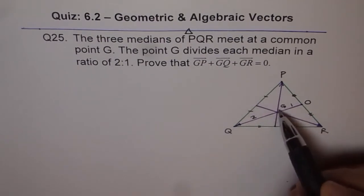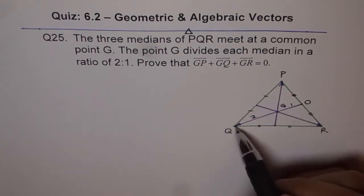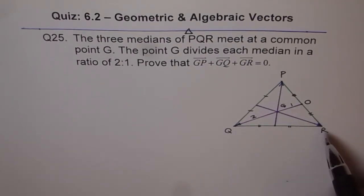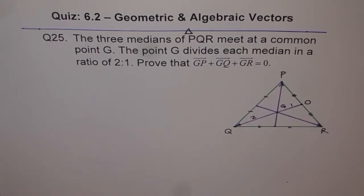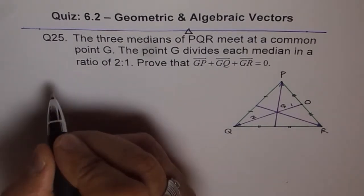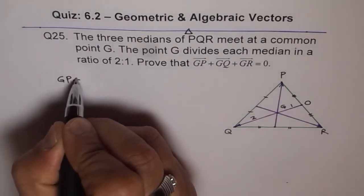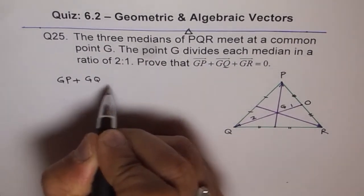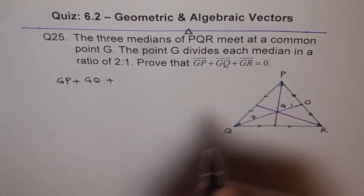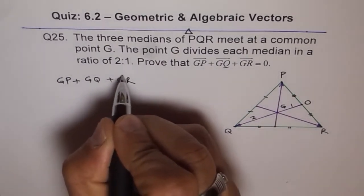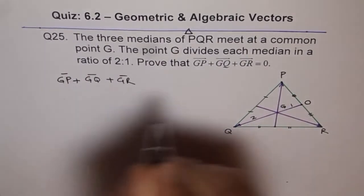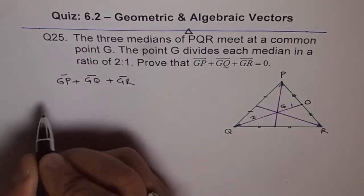Prove that GP plus GQ plus GR is 0. That's what we need to prove. Now to prove this, let's start with the left side and see how we can show this. So we have GP plus GQ plus GR. We have to prove that to be equal to 0. Let's see what this is equal to.